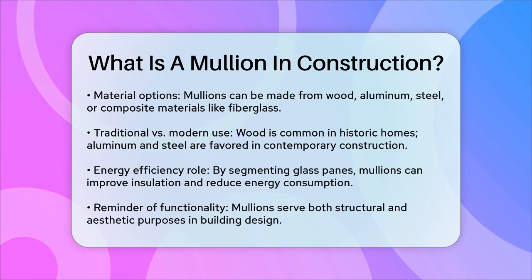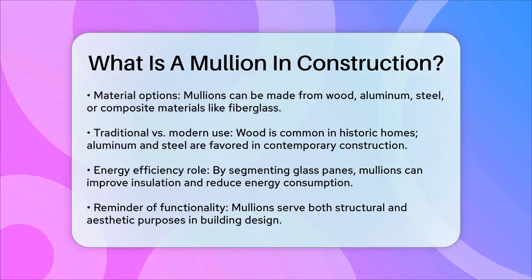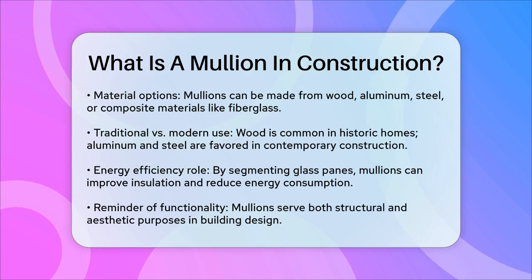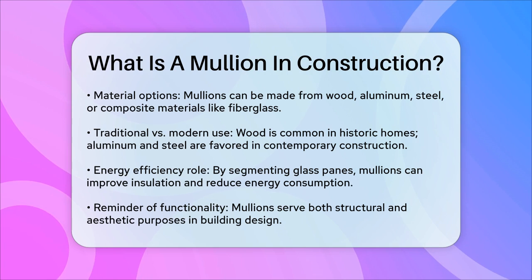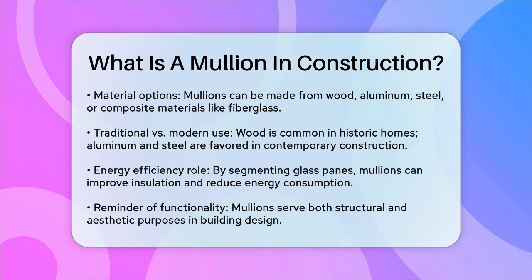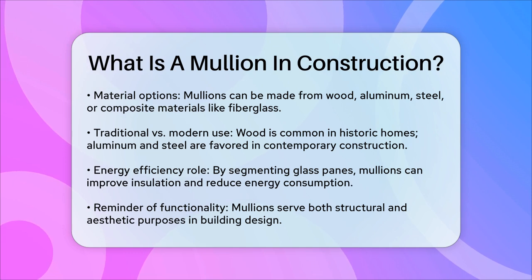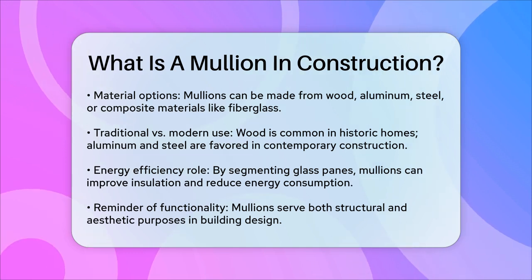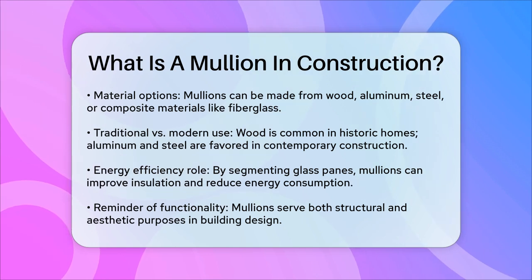In addition to their structural and aesthetic roles, mullions also contribute to energy efficiency. By dividing large panes of glass into smaller sections, mullions can help reduce the overall amount of glass used, which can improve insulation and reduce energy consumption. So, the next time you look at a building with divided windows, remember that those vertical or horizontal bars are not just for show — they are mullions, working hard to support the structure and enhance the design of the building.